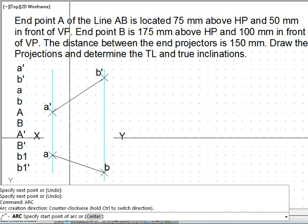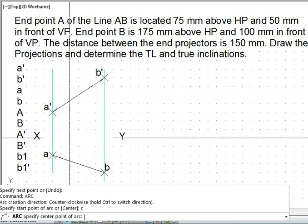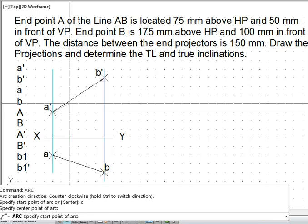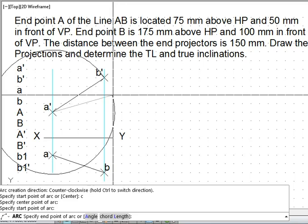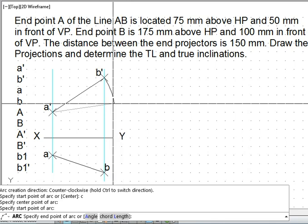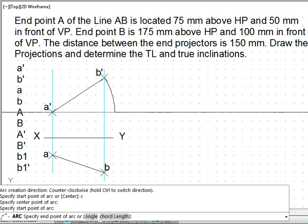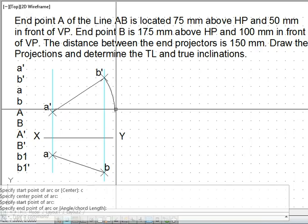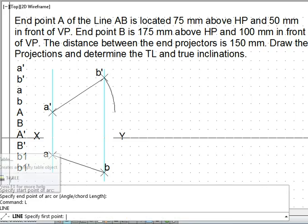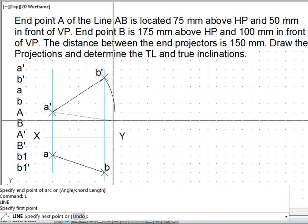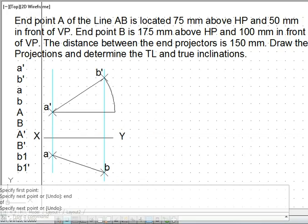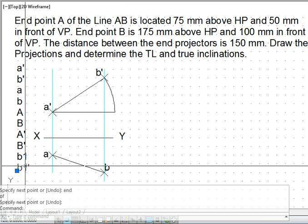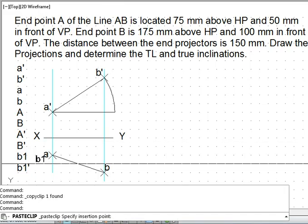For that, the procedure is the arc with center point method. We draw taking A dash as the center and B dash as the starting point. For drawing the arc in the clockwise direction, we need to invoke control command. Once we use control, we have control around the arc. Now this line from this point to the end of the arc we draw. What is this point? This point is basically B1 dash.